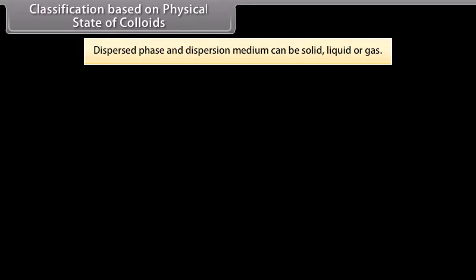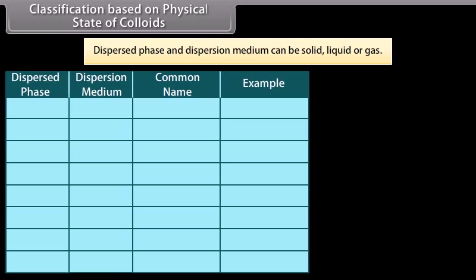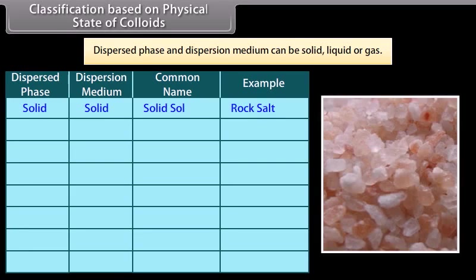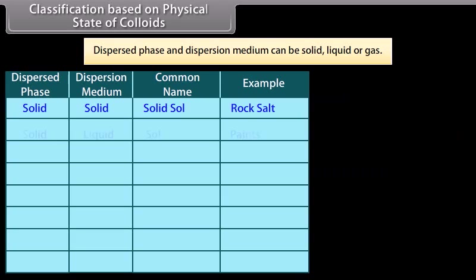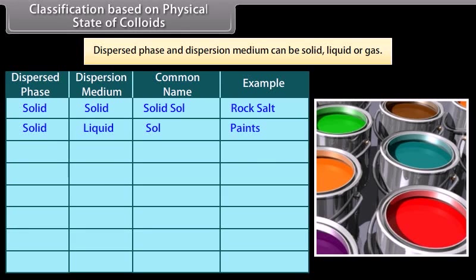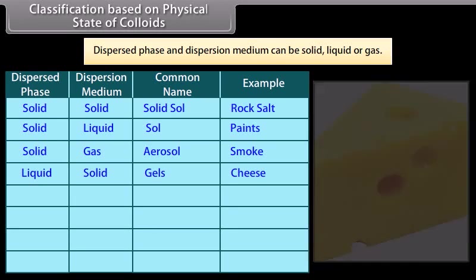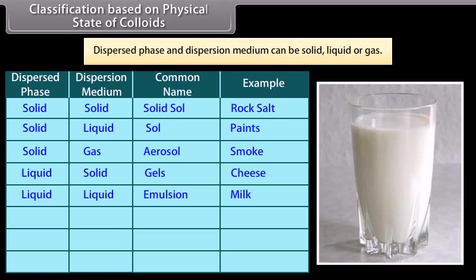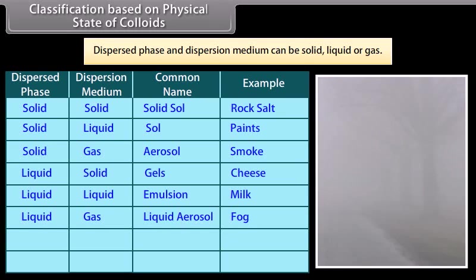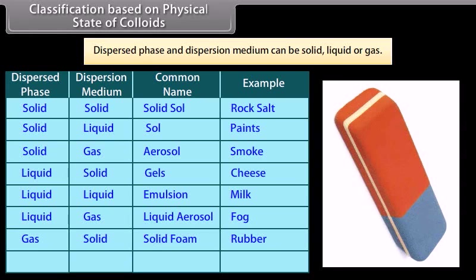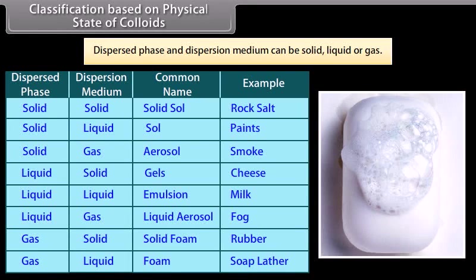Classification based on physical state: The dispersed phase and dispersion medium can be solid, liquid, or gas, giving eight types of colloidal systems. Examples: rock salt is a solid-in-solid sol; paint is a solid-in-liquid sol; smoke is a solid-in-gas aerosol; cheese is a gel; milk is an emulsion; fog is a liquid aerosol; rubber is a solid foam; and soap lather is a foam.